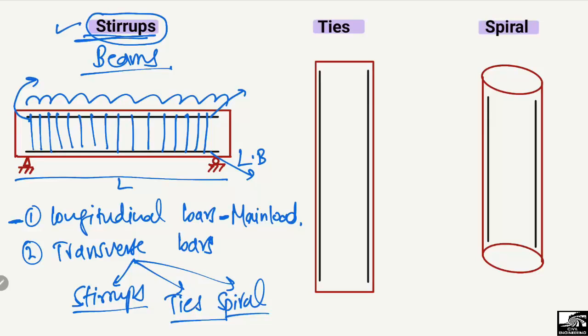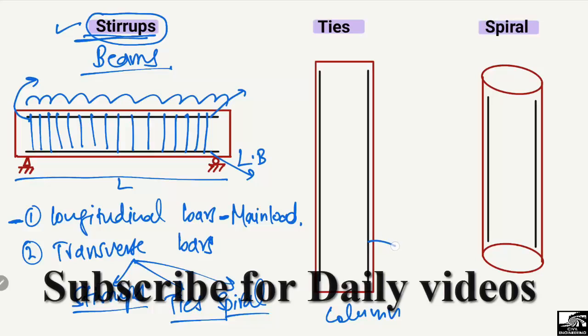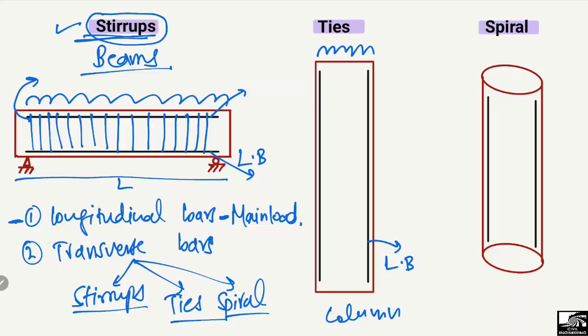Similarly, consider a column in which we provide the main vertical bars — known as the longitudinal bars. They take the main load of the column. A column is a compression member, so mostly concrete is responsible for taking compression, but we also provide the main bars to resist any bending or buckling. These are called longitudinal bars because they run along the longitudinal axis of the column.